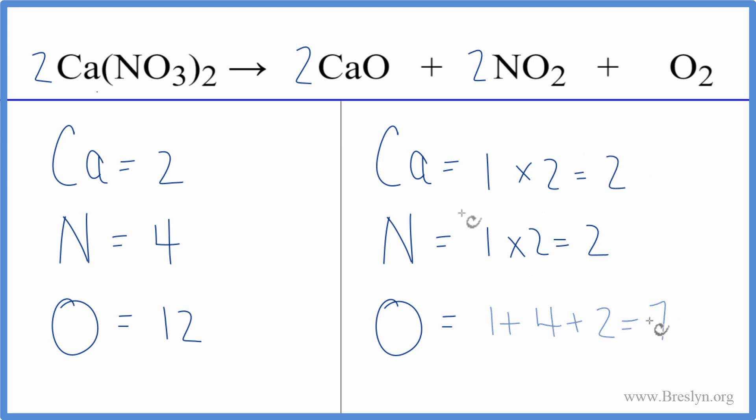Let's update the oxygens again. Two times the one, that's two, plus we have the four, and then the two with the O2. Now we have ten oxygen atoms.